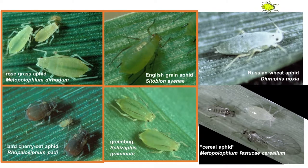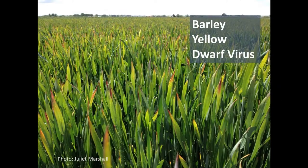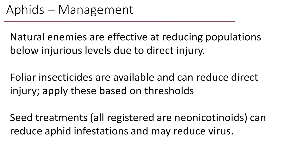When trying to make decisions about managing aphids, if we suspect virus is present, we have to be quite aggressive to avoid injury. Barley yellow dwarf virus — shown here in an infection in southern Idaho photographed by Juliet Marshall — can be quite destructive to yield. For aphid management, natural enemies are effective at reducing populations below injurious levels, and foliar insecticides are available. Seed treatments are also registered, and much of our wheat is now planted with neonicotinoid treatments that tend to reduce aphid infestations and may reduce virus spread.